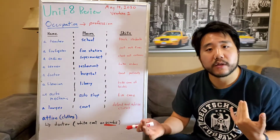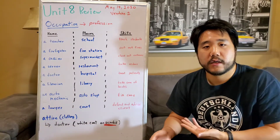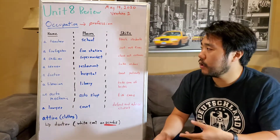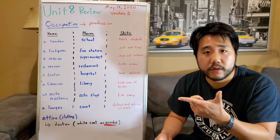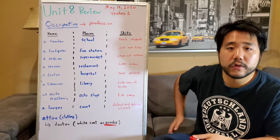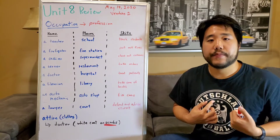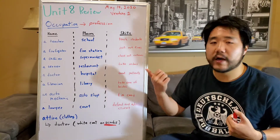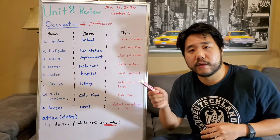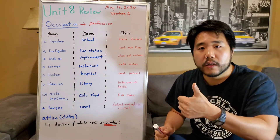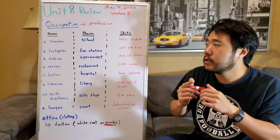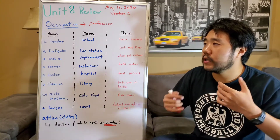Another easy example is a police officer. For their occupation, they usually carry a gun, wear a uniform, and ride in a police car. Similarly, firefighters have their own uniform. So we can identify a police officer because they're carrying a gun or handcuffs and wearing that blue uniform.